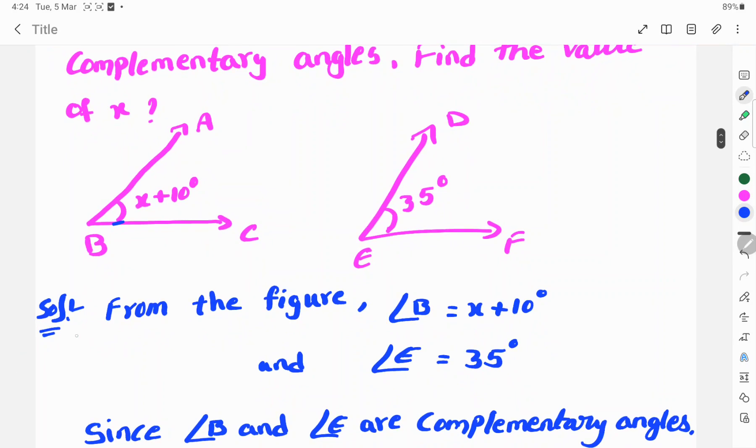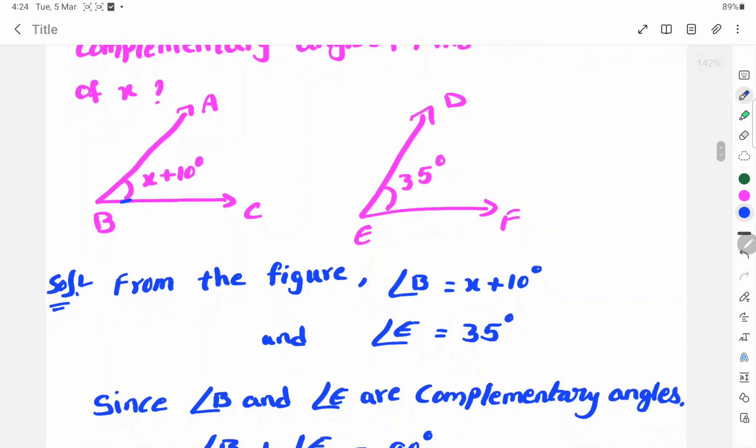Let's see the solution. From the figure, angle B is x plus 10 degrees and angle E is 35 degrees.